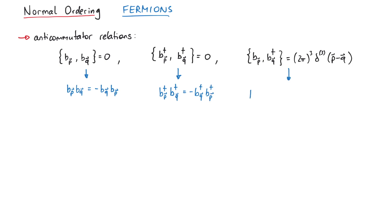And the third tells us that when we want to exchange a b with a b-dagger, we have to include a minus sign, as well as the canonical anti-commutator. And similar to the bosonic case, we ignore this term inside a normal order product.